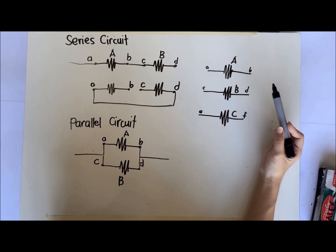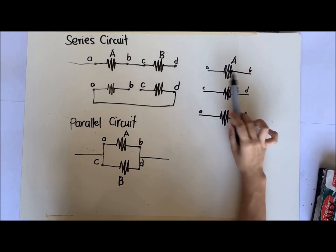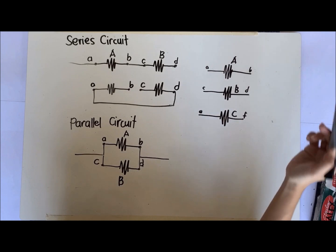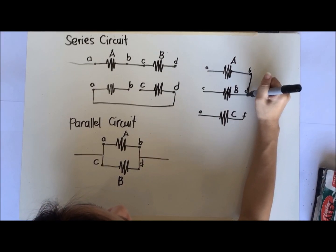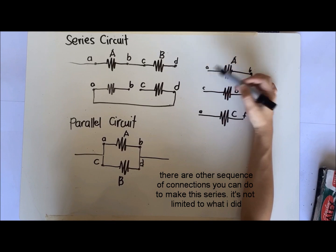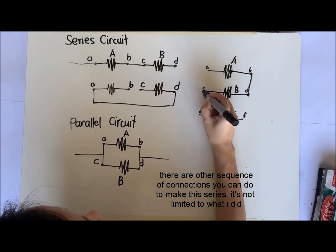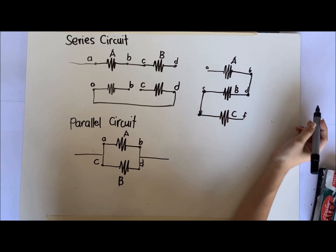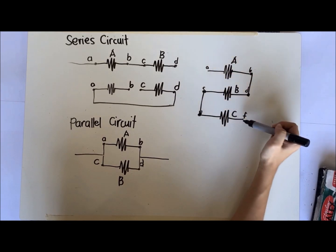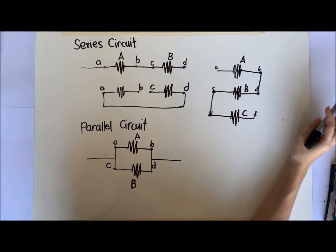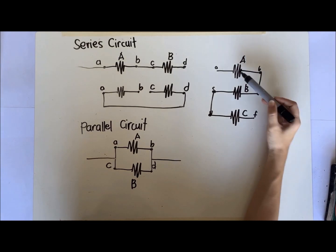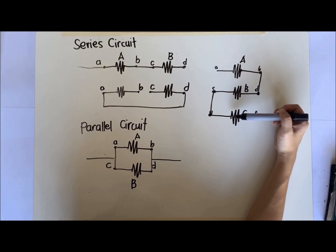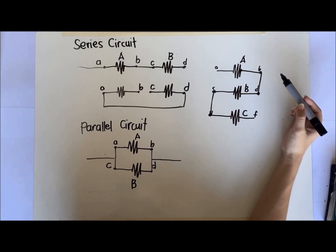But we can say this is series connected if we observe how the terminals or ends of the resistors are connected. This would be considered series if B connects to D, and A and C are not touching each other, and C is connected to E. So if you trace it, one line connects the three resistors. Thus, it is series connected. But just because your resistors are facing each other doesn't automatically mean it's parallel. You need to look at the ends or terminals of the components and how they are connected.